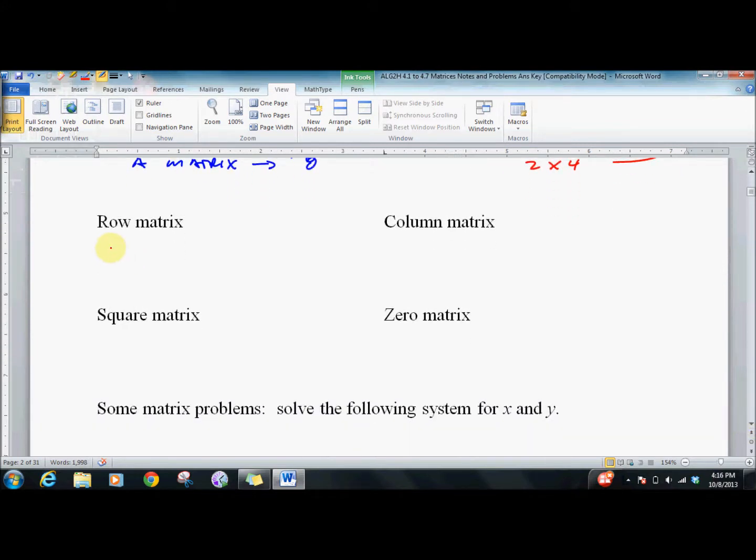A row matrix has just one row. A column matrix, of course, has just one column. A square matrix is a 2 by 2, 1 by 1, 3 by 3, etc.